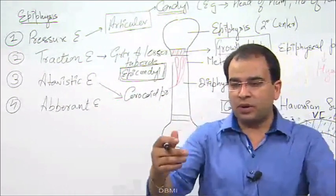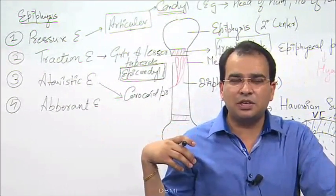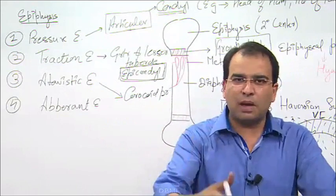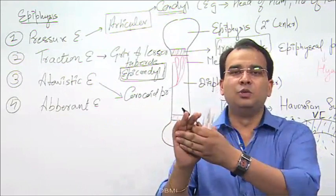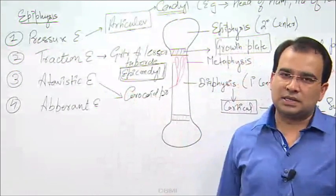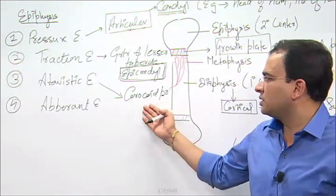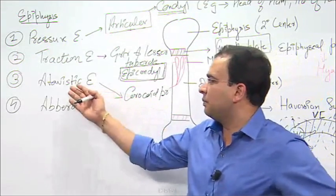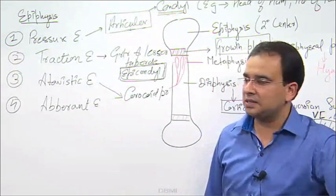The coracoid process was a separate bone — a different bone from the scapula initially in lower mammals — and then it unites in humans and resides with the scapula. So coracoid process is an example of atavistic epiphysis.